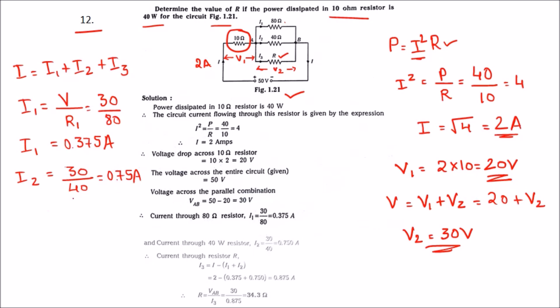Let us calculate I3. I3 is nothing but I minus I1 plus I2. I is 2 and this total is 0.375 plus 0.75. Calculating this we get I3 is equal to 0.875. Using this we can calculate the value of R that is 30 divided by 0.875, nothing but 34.3 ohms.